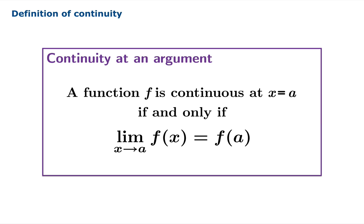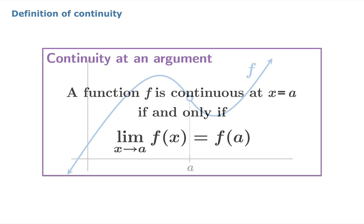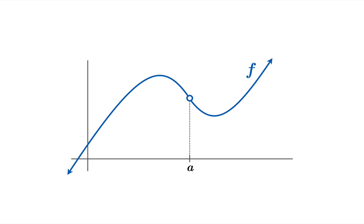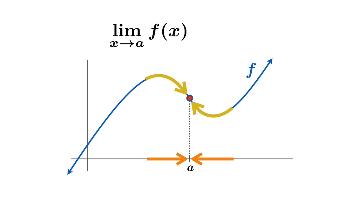Here's the definition of continuity you should be familiar with. Function f is continuous at an argument a if and only if the limiting value of f as x approaches a is equal to f of a. Graphically you can think of continuity as a sort of resolution of tension — if the limiting value as x approaches a matches the function value at a, that's continuity at the argument a.